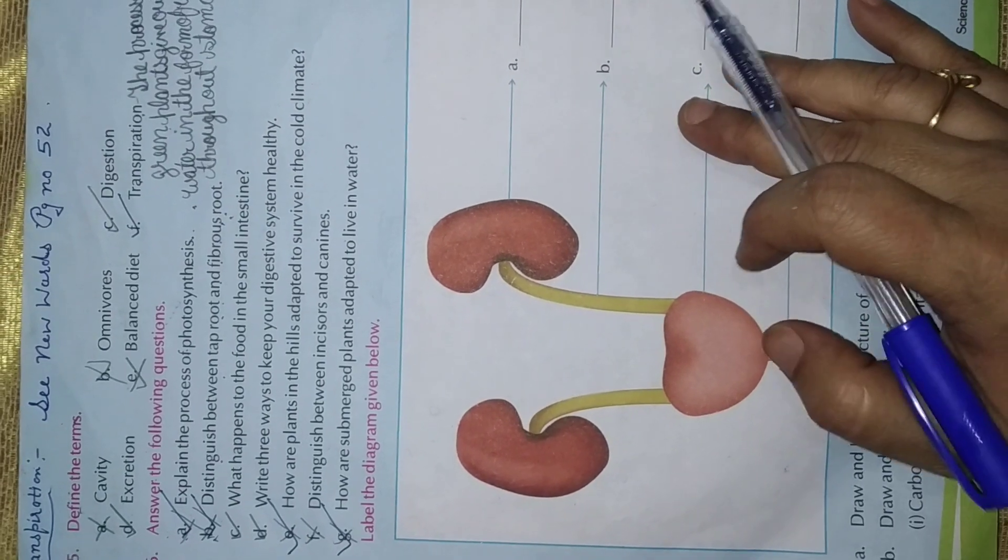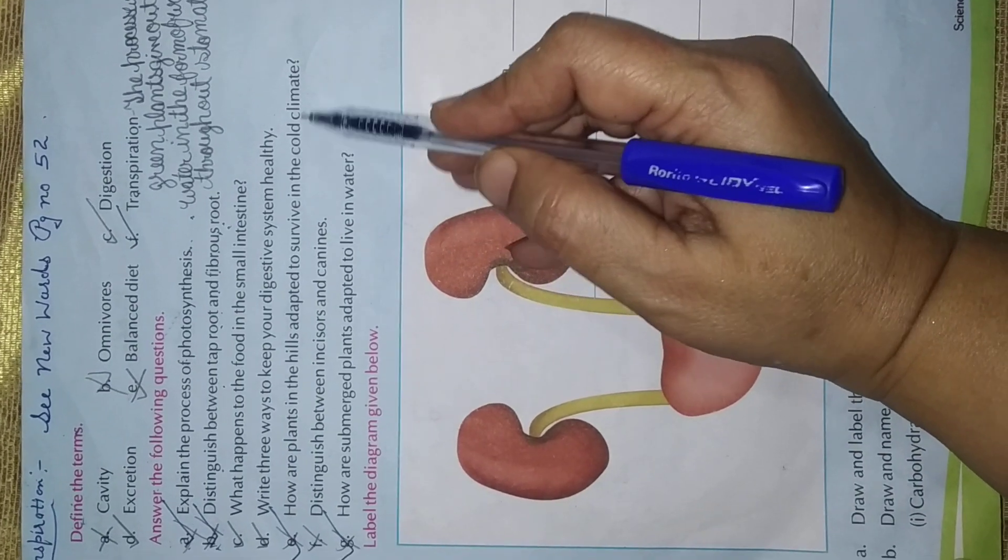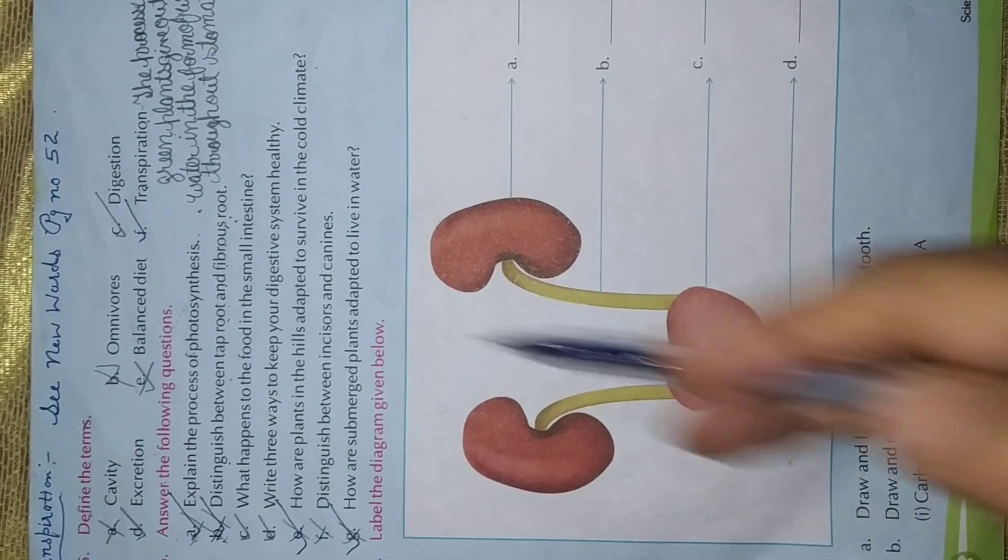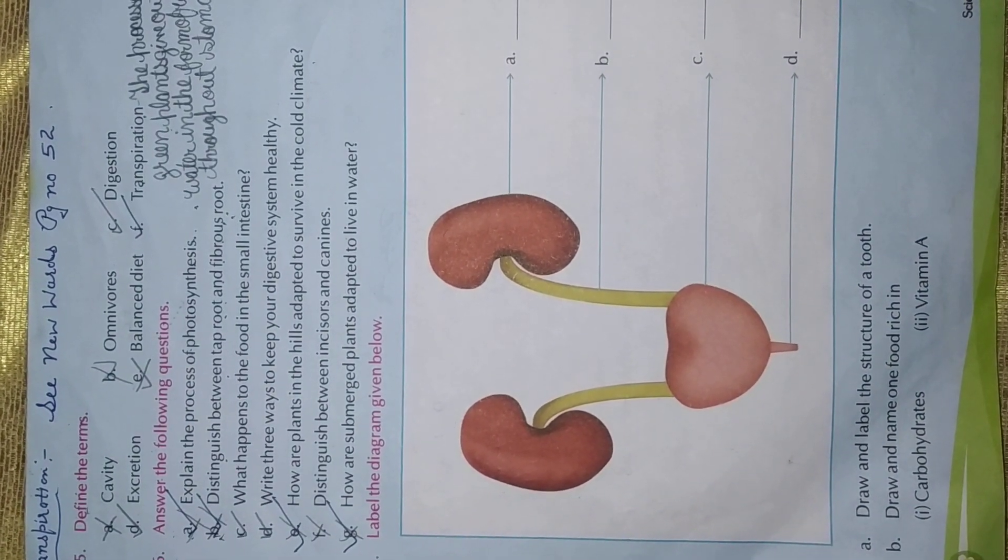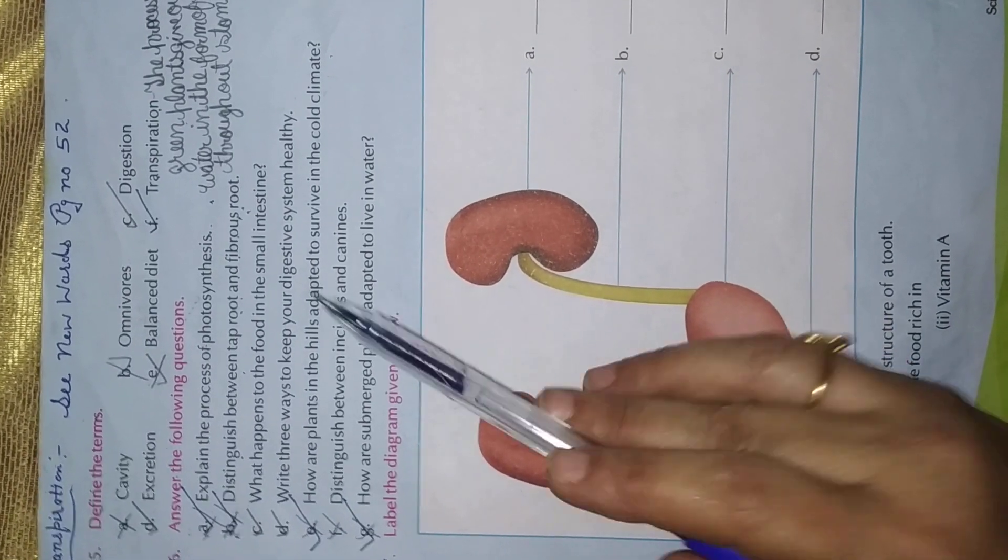Next question. How are plants in the hills adapted to survive in the cold climate? Number 1. The trees are tall and straight. The leaves are needle-like. They have cones instead of flowers. Understood?